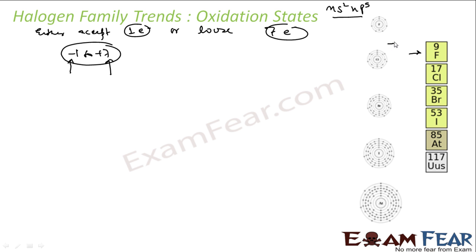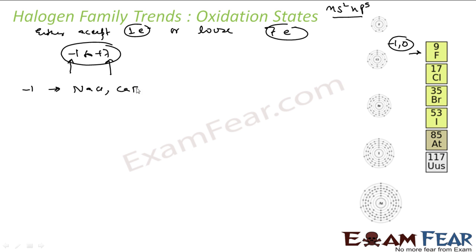Fluorine exhibits only minus 1 and 0 oxidation states. In normal fluorine gas it shows 0, but technically it shows only minus 1 in other scenarios, and it is the most electronegative element in the periodic table. For minus 1 oxidation state, there are many examples: for chlorine, NaCl; for fluorine, CaF2; for bromine, NaBr; for iodine, AgI. In all these cases the halogens have an oxidation state of minus 1.